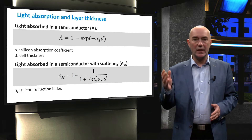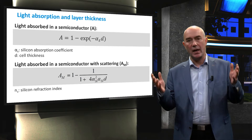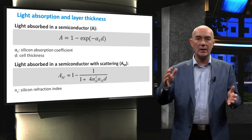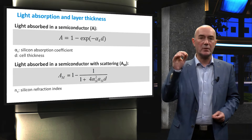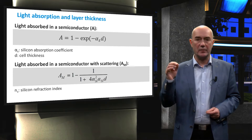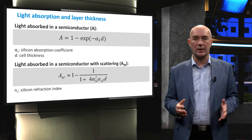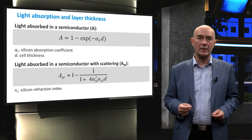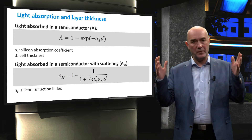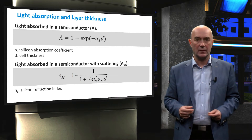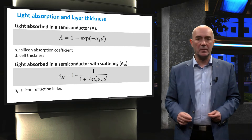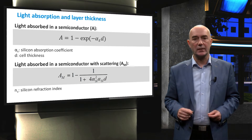By applying efficient light-trapping techniques, such as an ideal back reflector or Lambertian light scatterers, we can increase light absorption in the wavelength range of weak absorption by a factor of 4N², where N is the refractive index of the semiconductor. In the case of crystalline silicon, a theoretical light absorption enhancement can be of a factor of 50. With the help of light management techniques, we can keep the absorber layer thin and still enhance light absorption.